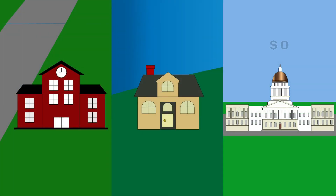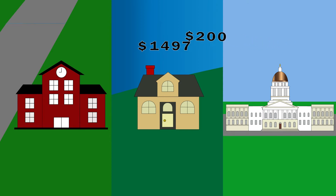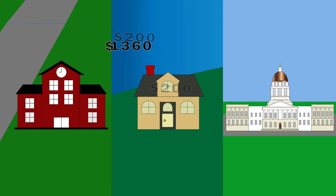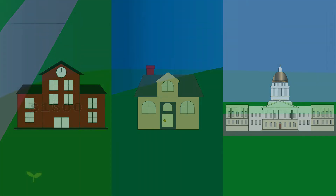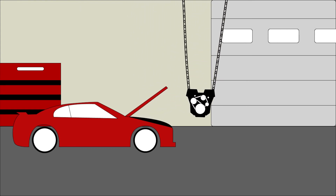For the communities where the state contribution is very low or no contribution is made at all, the state will adjust for the cost of educating special education students, disadvantaged students, or other costs. The state also funds special programs such as the career and technical education centers.